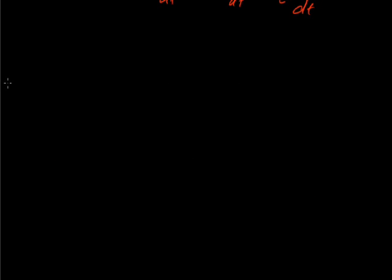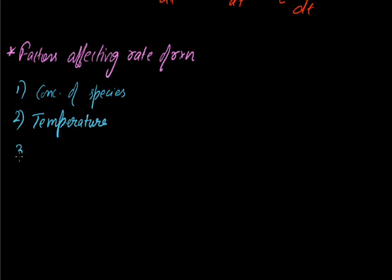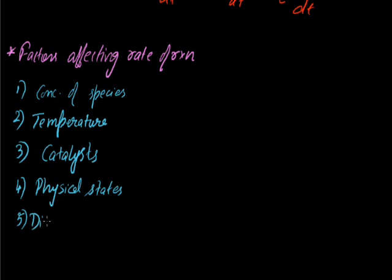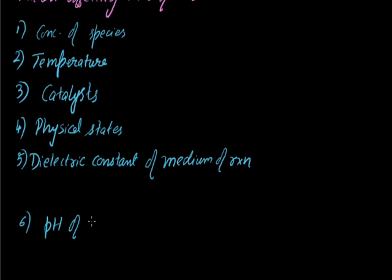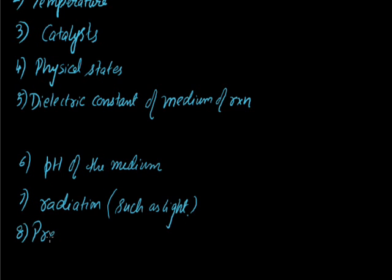Let's now talk about the factors affecting the rate of reaction. The factors are: first, concentration of different species; second, temperature; third, catalyst; fourth, physical states; fifth, dielectric constant of the medium of reaction; sixth, pH of the medium; seventh, radiations such as light; eighth, pressure; and ninth, electric and magnetic fields.